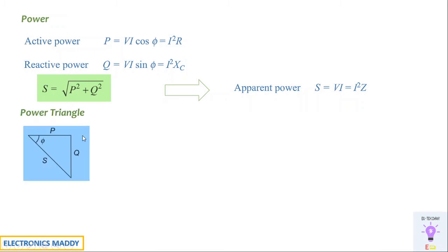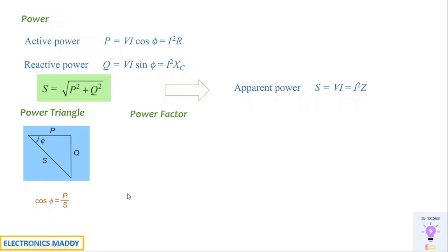We will look at the power triangle. S equals the square root of P squared plus Q squared. From the Pythagorean theorem relationship, S is the hypotenuse, P is the adjacent side, and Q is the opposite side. From this, the cos phi power factor is nothing but P by S — a very important relationship for understanding power factor.